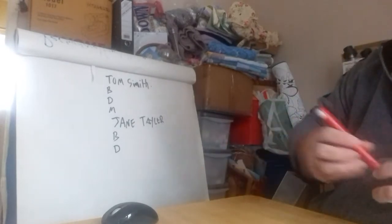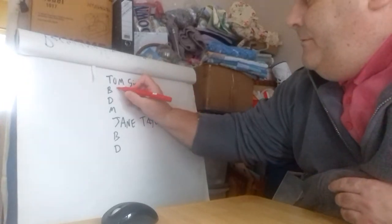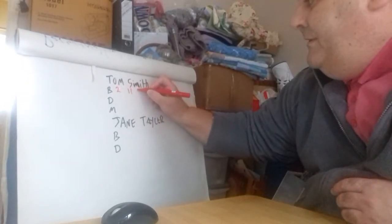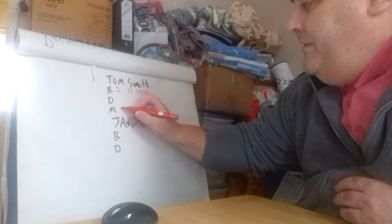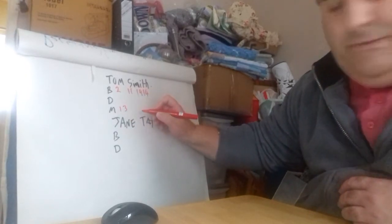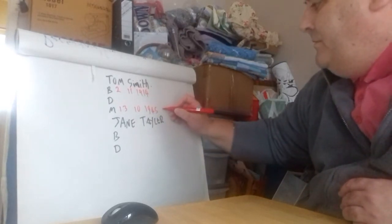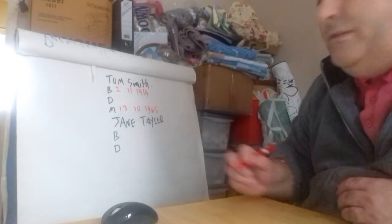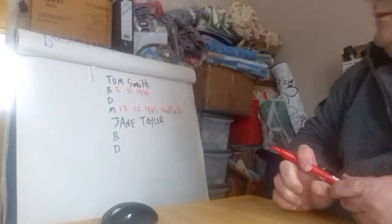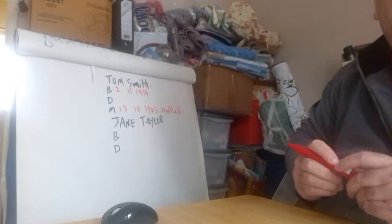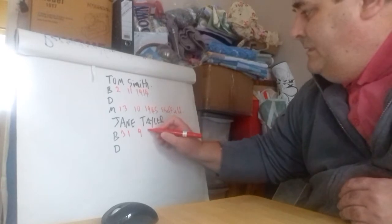I'll have to move the camera. For Tom, underneath the birth date, I'm going to put the 2nd of the 11th, 1914. I'm going to put them as married on the 13th of the 10th, 1945. And you can also put in there where they were married - because I live in Sheffield, I'm going to put Sheffield down. And obviously you can build up. We've got Jane as well, so let's do a fictitious date of birth for her - 1913.